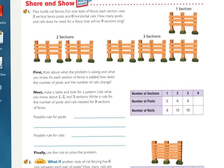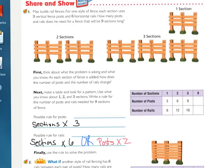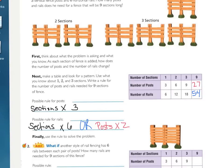The rules I'm writing work vertically, not horizontal. The rule for the posts: the number of sections times three gives the number of posts needed. For the rails, you could use the number of sections times six, or the number of posts times two — either way, you should get the same answers for nine sections. You should have ended up with 27 for the number of posts and 54 for the number of rails.